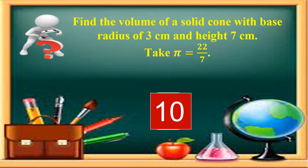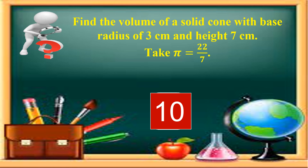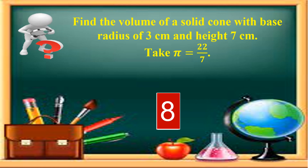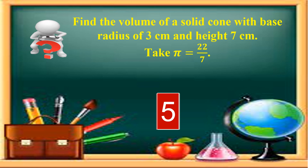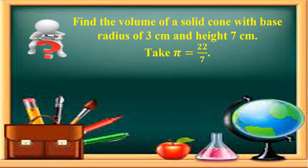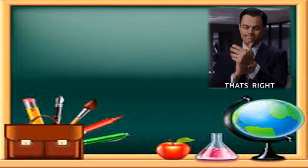Before I end the discussion, kindly answer this question. I will give you 10 seconds. Find the volume of a solid cone with base radius 3 centimeters and height 7 centimeters. Take pi is equal to 22 over 7. Timer starts now. Time is up! The answer is 66 cubic centimeters.